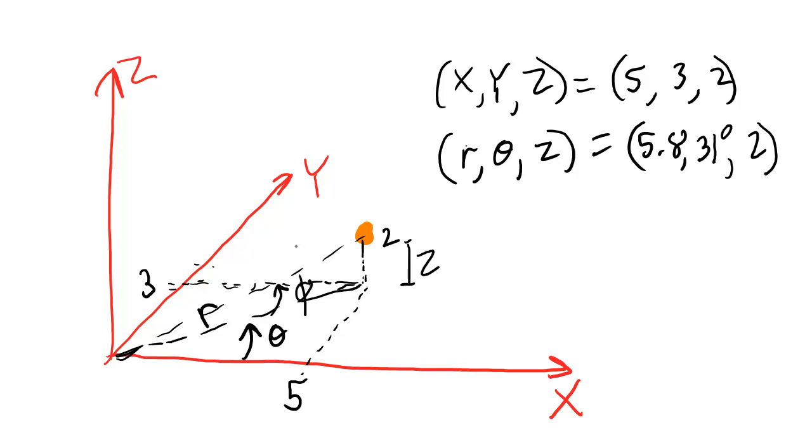And then the length of this line, I'll just call that r2 here. And then I could write the position of this point using theta, phi, and r2.